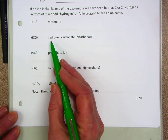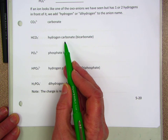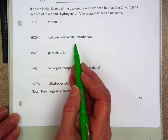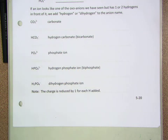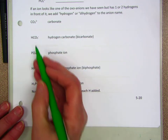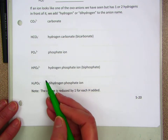We call that hydrogen carbonate. It's also called bicarbonate — you know this from your kitchen. Sodium bicarbonate is baking soda. That's the ion combined with a sodium ion.